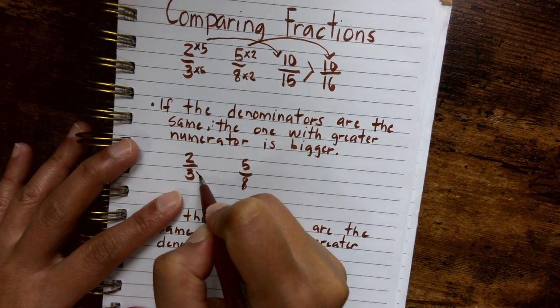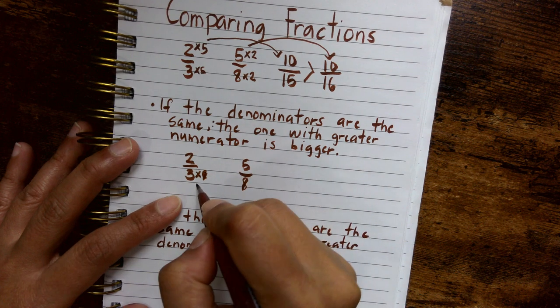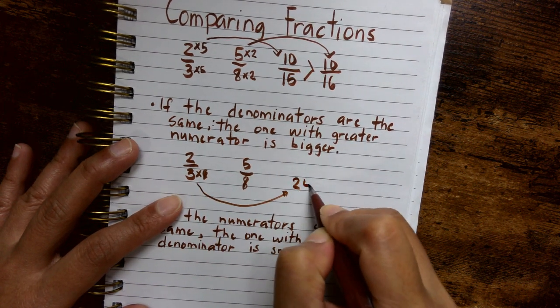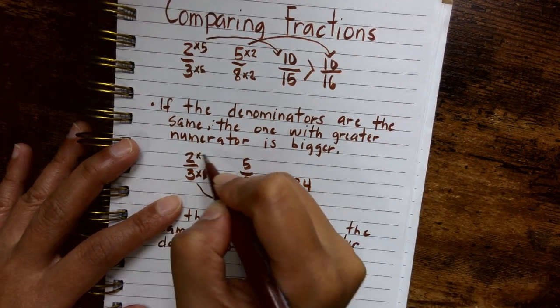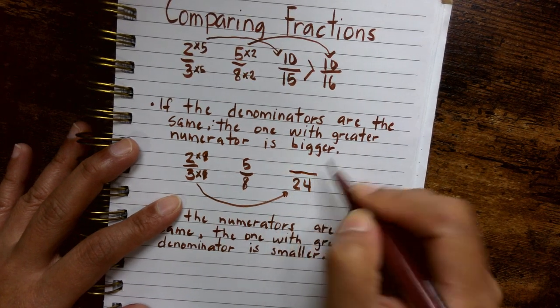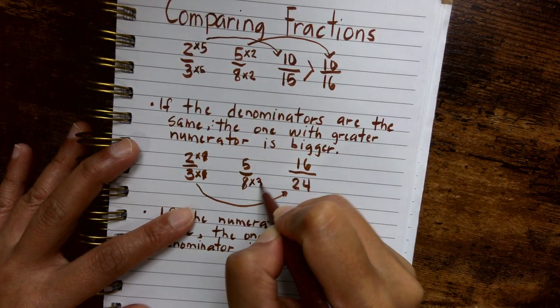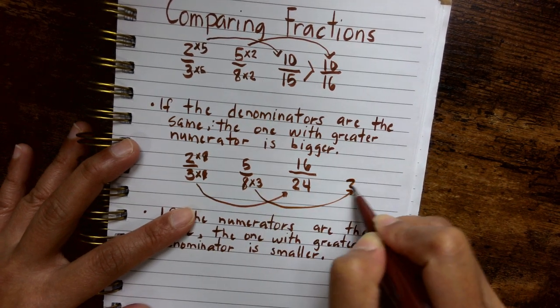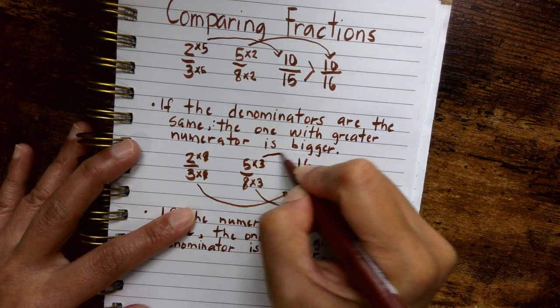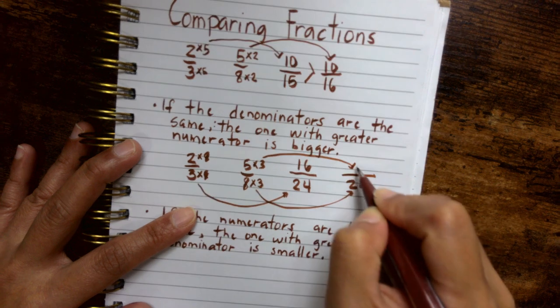Now, I know that if I multiply three by eight, I will get 24. And so I'd also have to multiply this by eight. So my numerator is going to be 16. I know that if I multiply eight by three, I'm going to get 24. And so I'd have to multiply this by three also, which gives me 15.